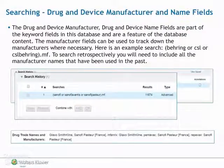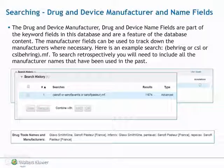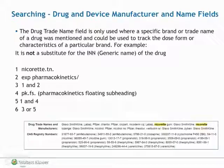The drug and device manufacturer and drug and device name fields are part of the keyword fields in this database and are a feature of the database content. The manufacturer fields can be used to track down manufacturers where necessary. To search retrospectively, you would need to include all of the manufacturer names that have been used in the past. The drug trade name field is only used where a specific brand or trade name of a drug was mentioned, and could be used to track down the dose form or the characteristics of a particular brand.